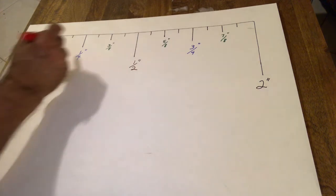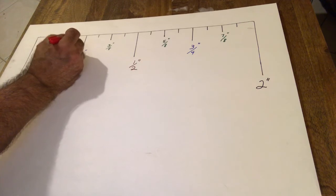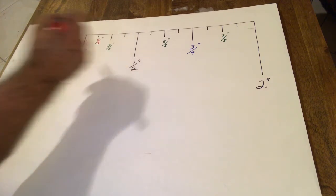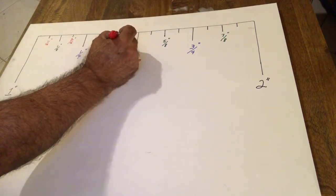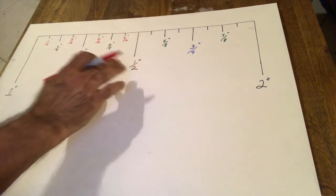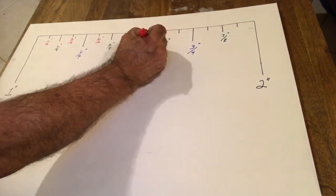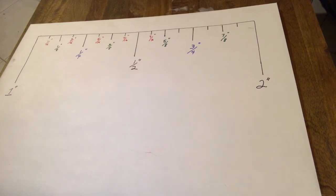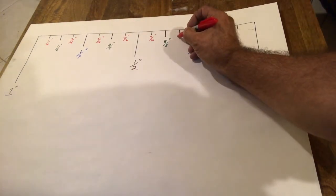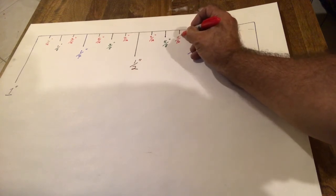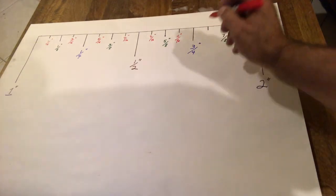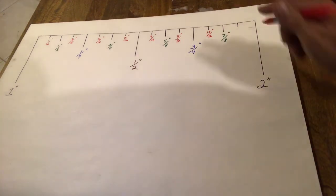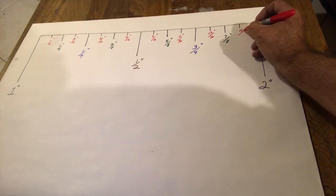That would be two-sixteenths, this would be three-sixteenths, six-sixteenths, seven-sixteenths, eight-sixteenths, this would be nine-sixteenths, ten-sixteenths, eleven-sixteenths, twelve-sixteenths, thirteen-sixteenths, fourteen-sixteenths, and fifteen-sixteenths.